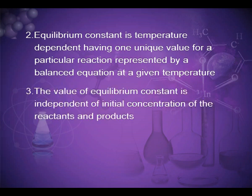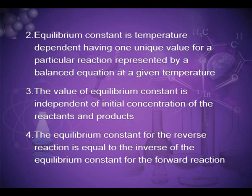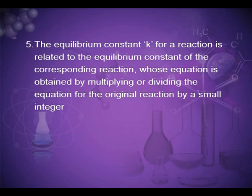Third point: the value of equilibrium constant is independent of initial concentration of the reactants and products. The equilibrium constant for the reverse reaction is equal to the inverse of the equilibrium constant for the forward reaction. Fifth point: the equilibrium constant K for a reaction is related to the equilibrium constant of the corresponding reaction whose equation is obtained by multiplying or dividing the equation for the original reaction by a small integer.